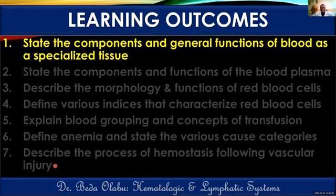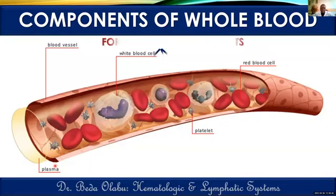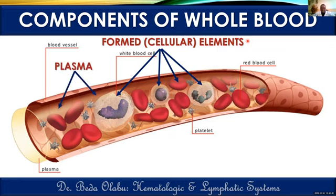Let's begin with the components and general functions of blood. Whole blood consists of two major components: the formed elements — which refers to the cellular components of blood, the cells present in blood tissue — and plasma, which is the fluid component of blood. So basically, blood has a fluid called plasma and cells which constitute the formed elements.